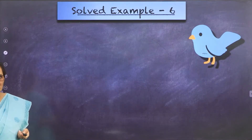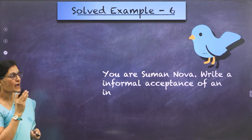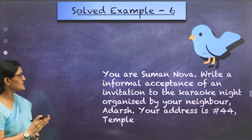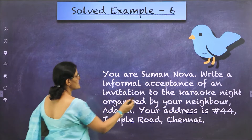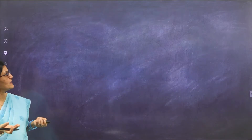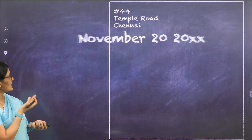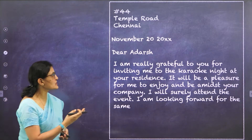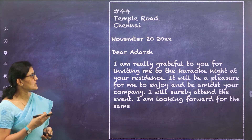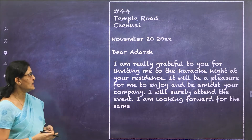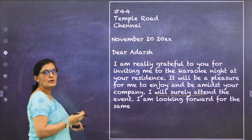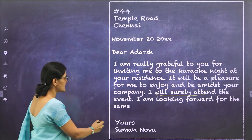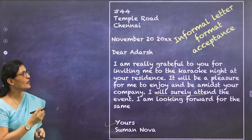Example 6 is an informal acceptance. The format is the same — box, address, date, and salutation. The body: 'I am really grateful to you for inviting me to the karaoke night at your residence. It will be a pleasure for me to enjoy and be amongst your company. I will surely attend the event. I am looking forward to it.' You have expressed yourself and confirmed attendance at the karaoke night. Conclude: Yours, Suman Nova. This is your informal letter of acceptance — a friend writing to a friend.